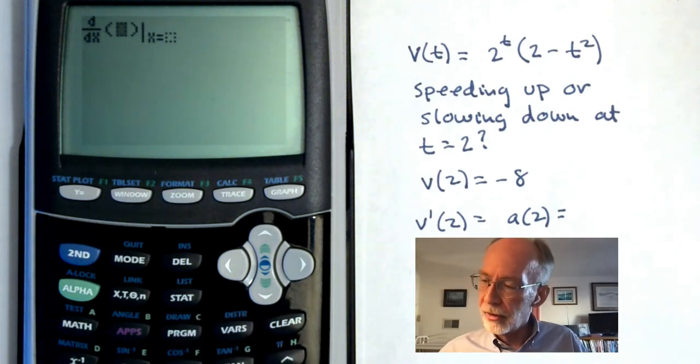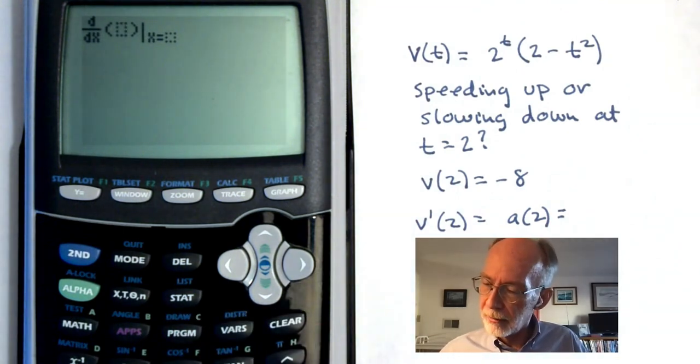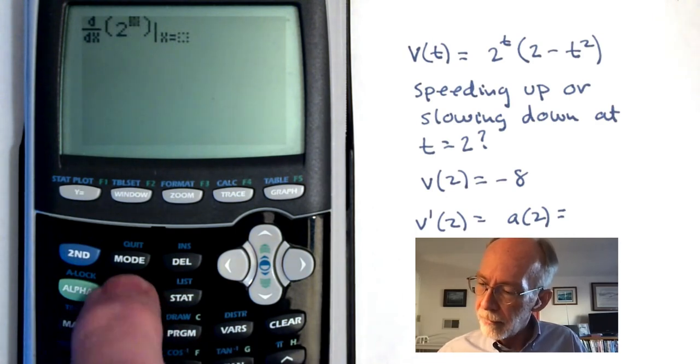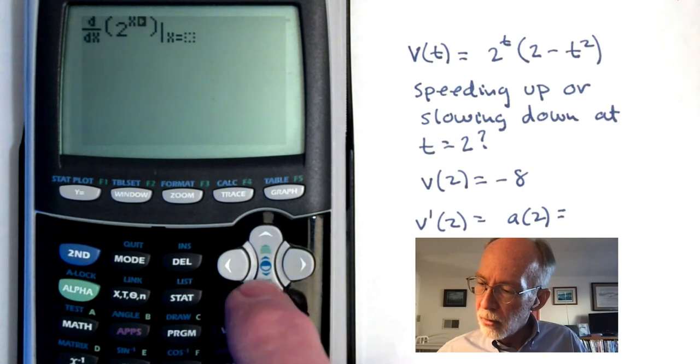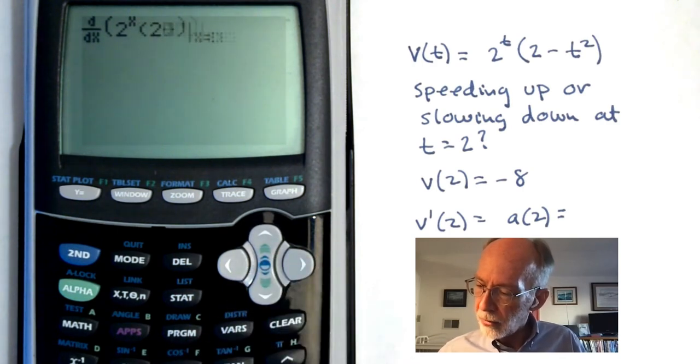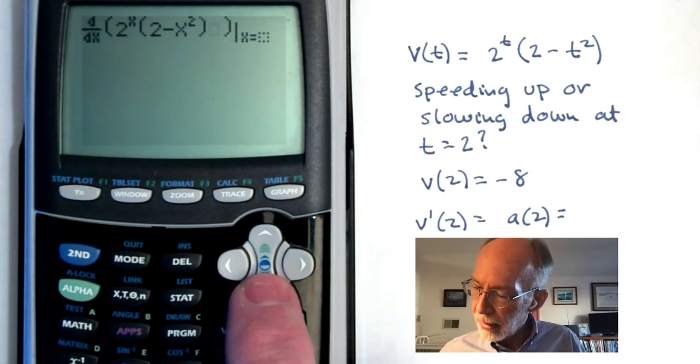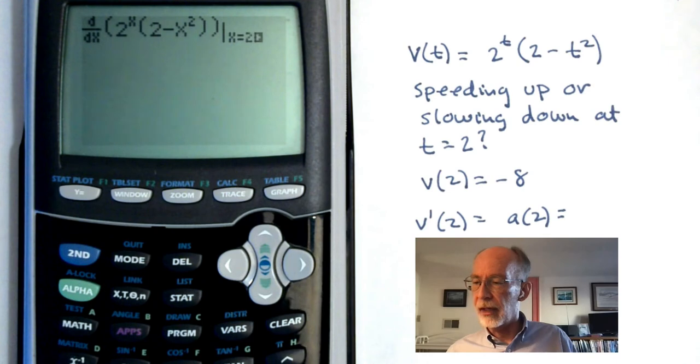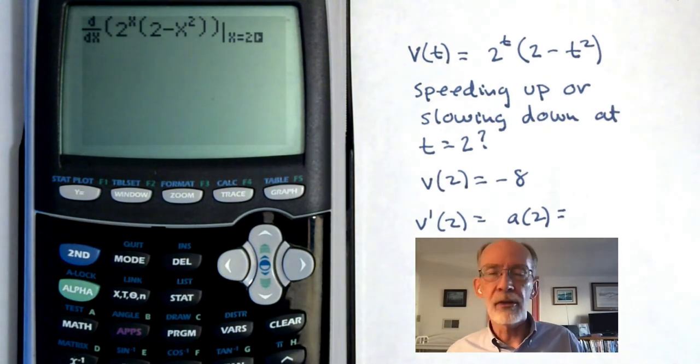And then we're going to enter the velocity function as the argument of this derivative. So that is 2^x(2-x^2). And this is at x equals 2. So you just have to kind of arrow your way through. And we'll hit enter.